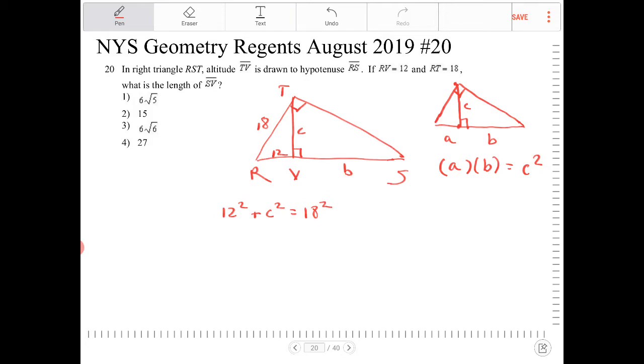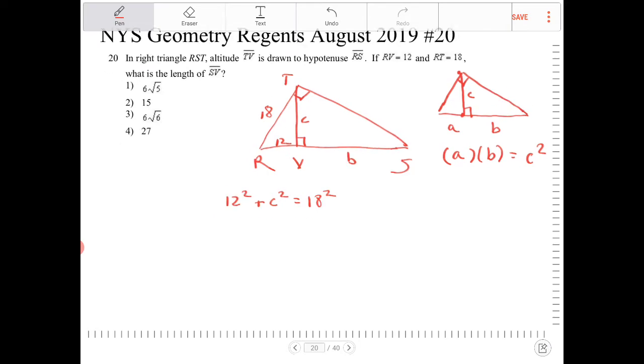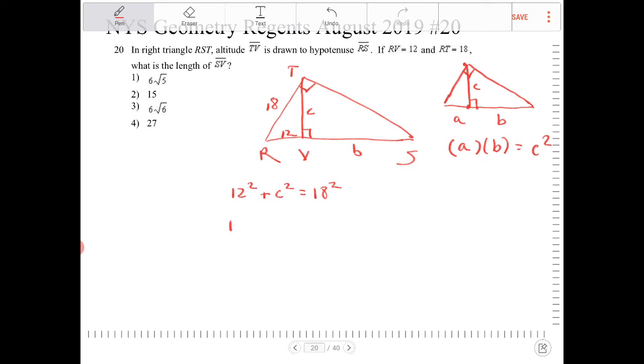I'm just going to write out the different relationships right now before I solve for what C is. We also recognize that 12 times B is equal to C squared.